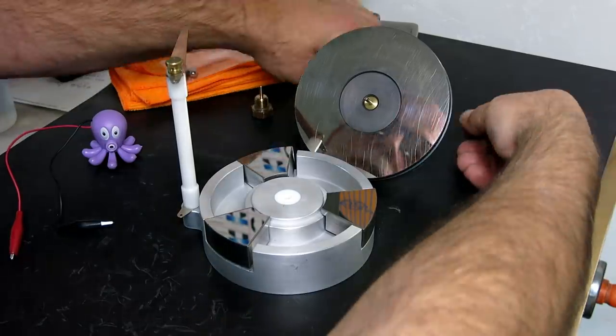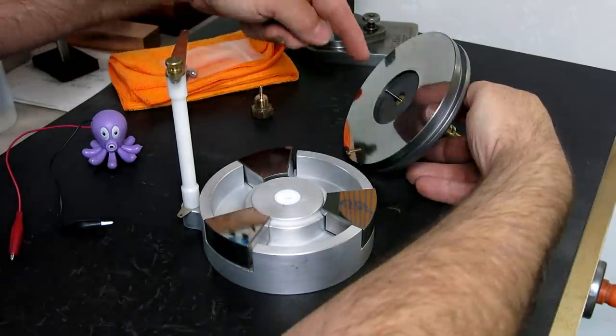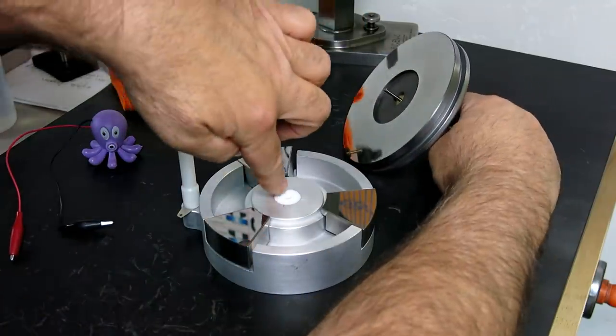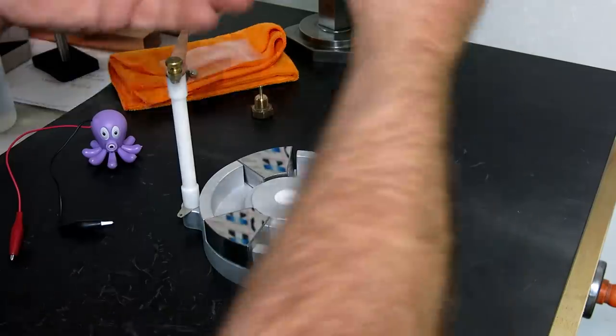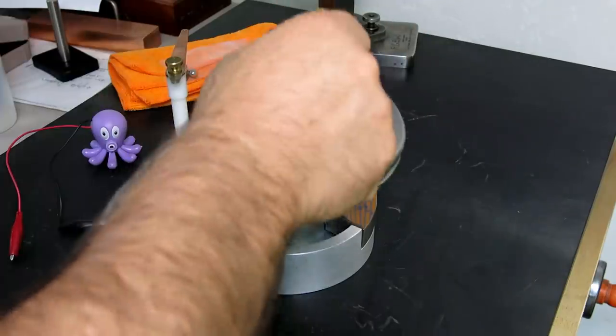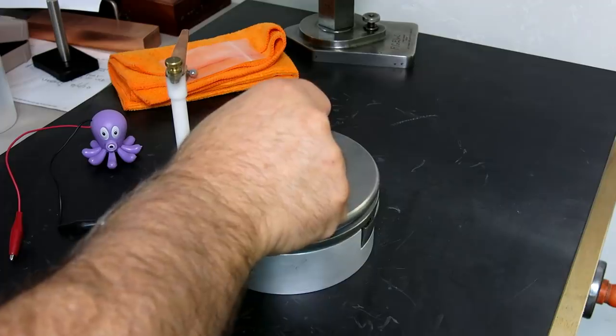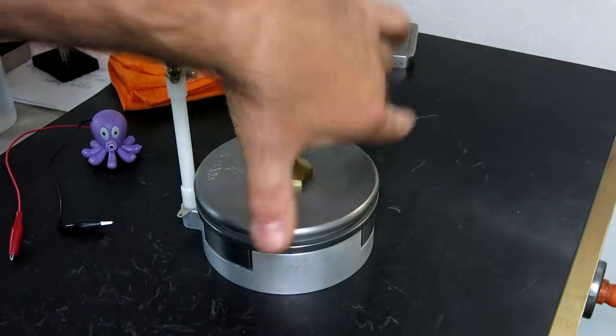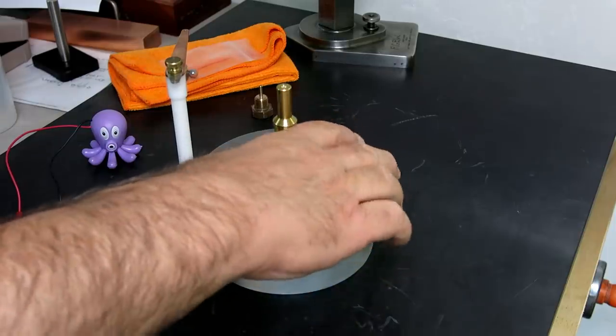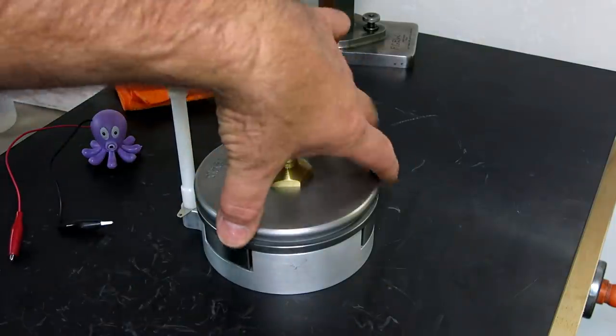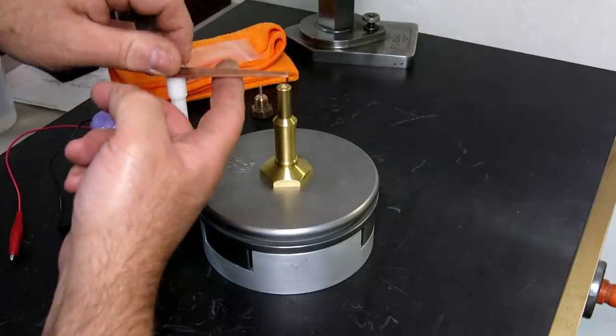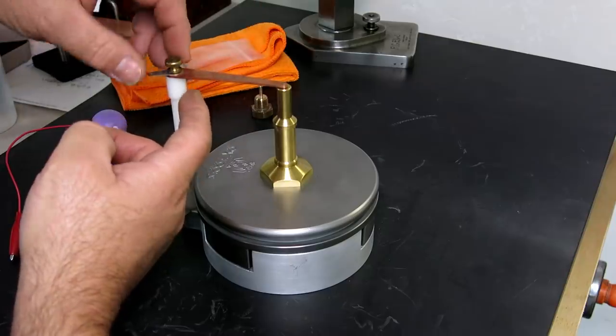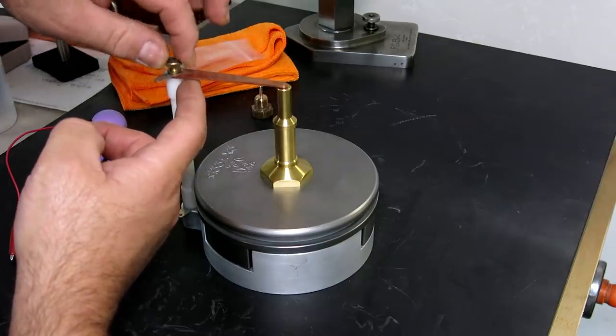So now without touching anything, we want to put it together and this center small diameter shaft fits in and that bushing is an insulator as well. So let's drop that in there and just gently set her down like so and make sure everything is in order. And it looks like it is.